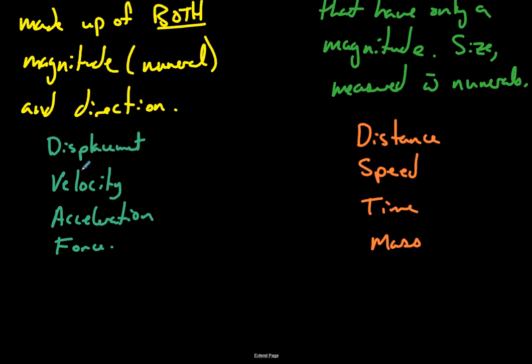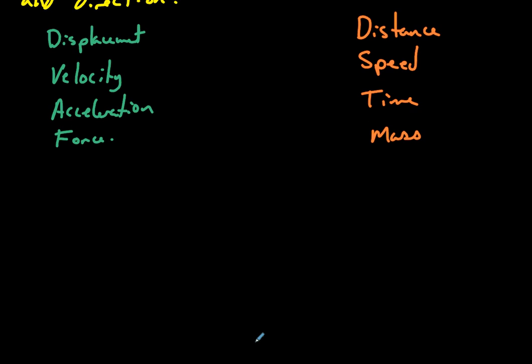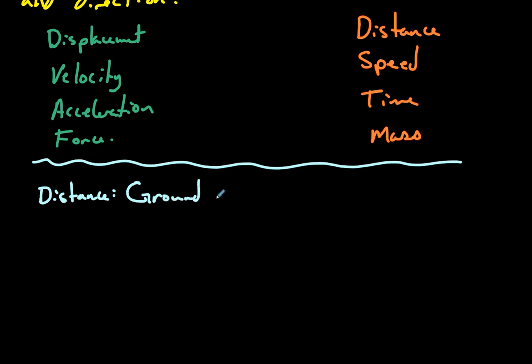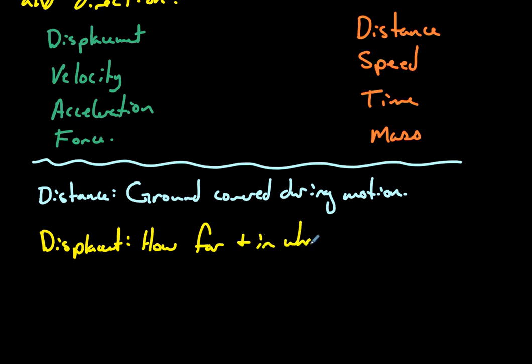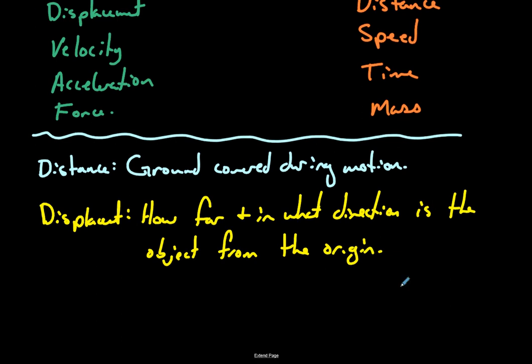So to demonstrate the difference, let's talk about displacement first. So we'll define it and then we'll talk about it. Let's do distance first to get a sense of what we're talking about. Distance is essentially just ground covered during motion. And then displacement is a bit different in that, remember it being a vector value has a direction attached. I like to think of it as how far and in what direction is the object from the origin.